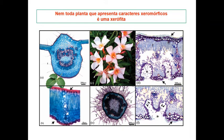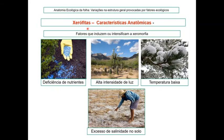Sempre usamos todas as informações possíveis para estabelecer a classificação da planta. Reforçando: vários fatores induzem ou intensificam a xeromorfia — a deficiência nutricional (como em plantas de cerrado), a alta intensidade de luz, temperaturas baixas (como em pinos e araucárias do hemisfério norte, com características xeromórficas fixadas geneticamente) e o excesso de salinidade no solo. Nestes últimos dois casos, trata-se de seca fisiológica: a água está presente mas não disponível — congelada ou salina.